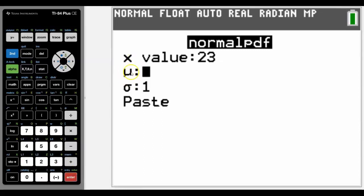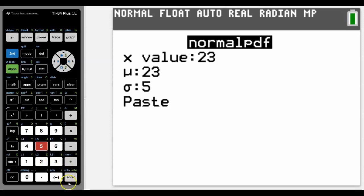Let's go for a x value of that middle, which is 23, the mean. The mean again, we know is 23 and the standard deviation is 5.